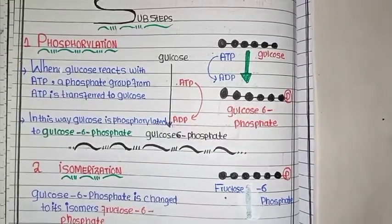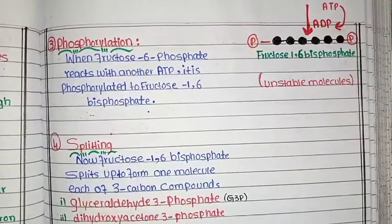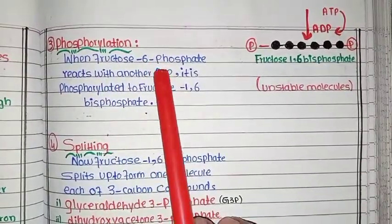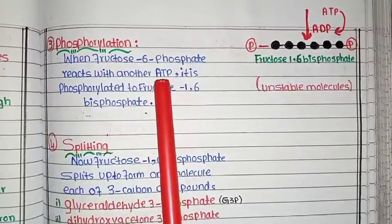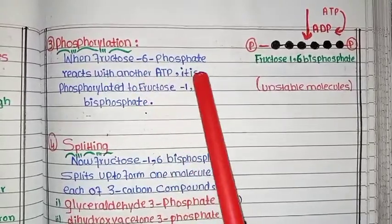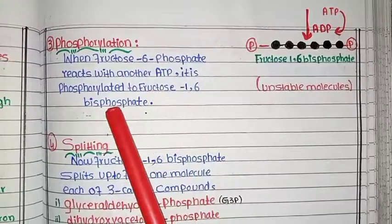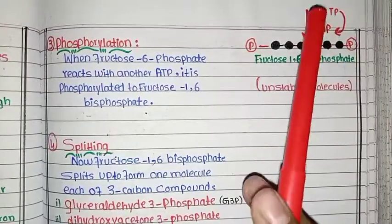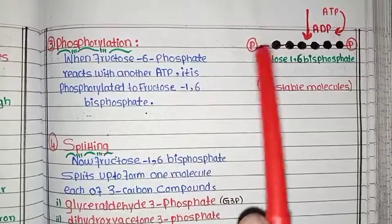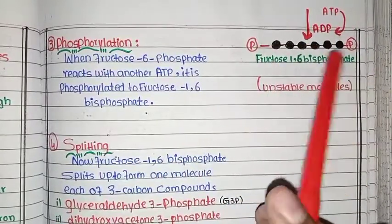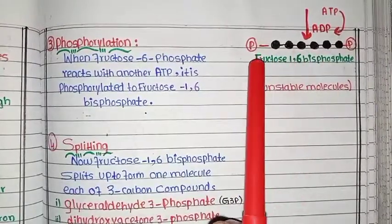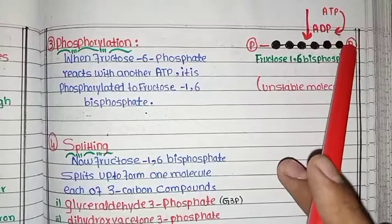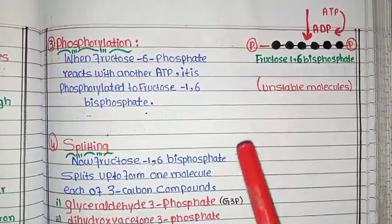The third step is phosphorylation again. The fructose-6-phosphate that was formed now reacts with another ATP. This second ATP is provided to enable breakdown. It is phosphorylated to fructose-1,6-bisphosphate. So the phosphate from another ATP is attached, ADP remains, and the molecule now has phosphate at carbon 1 and carbon 6 — hence fructose-1,6-bisphosphate.